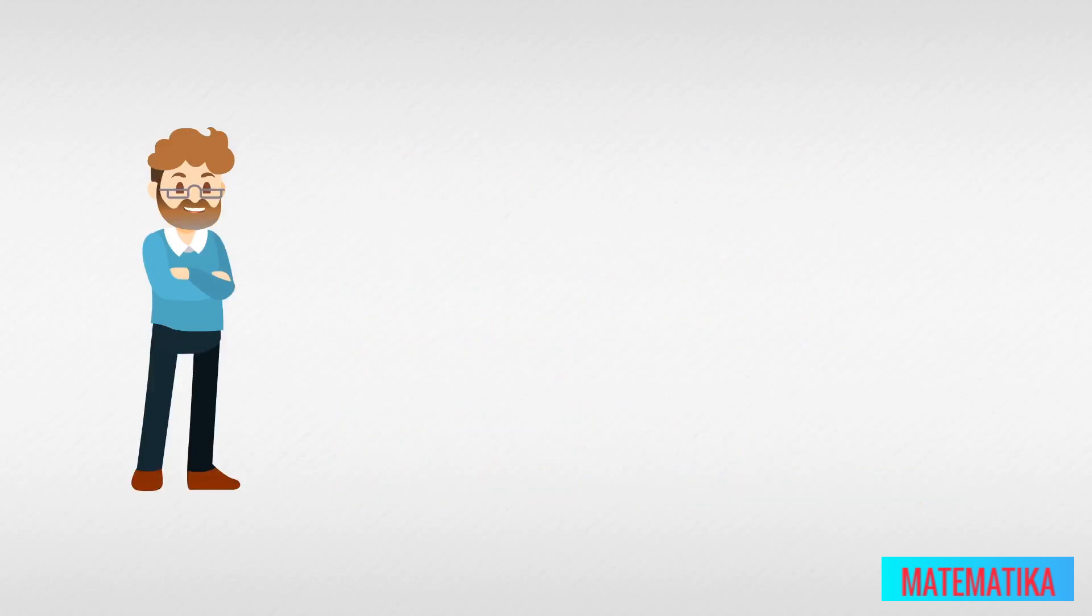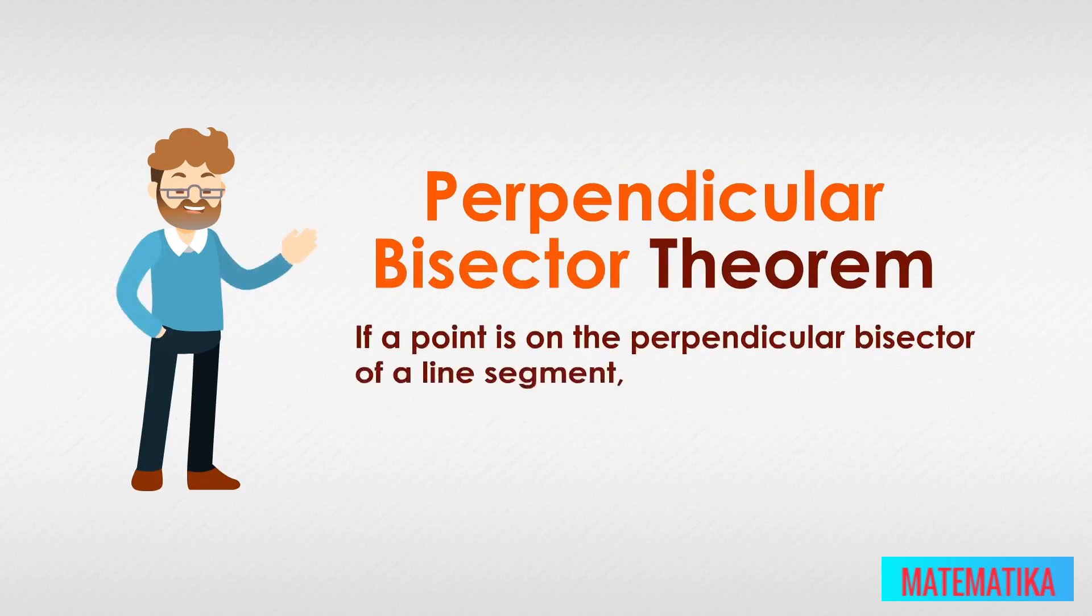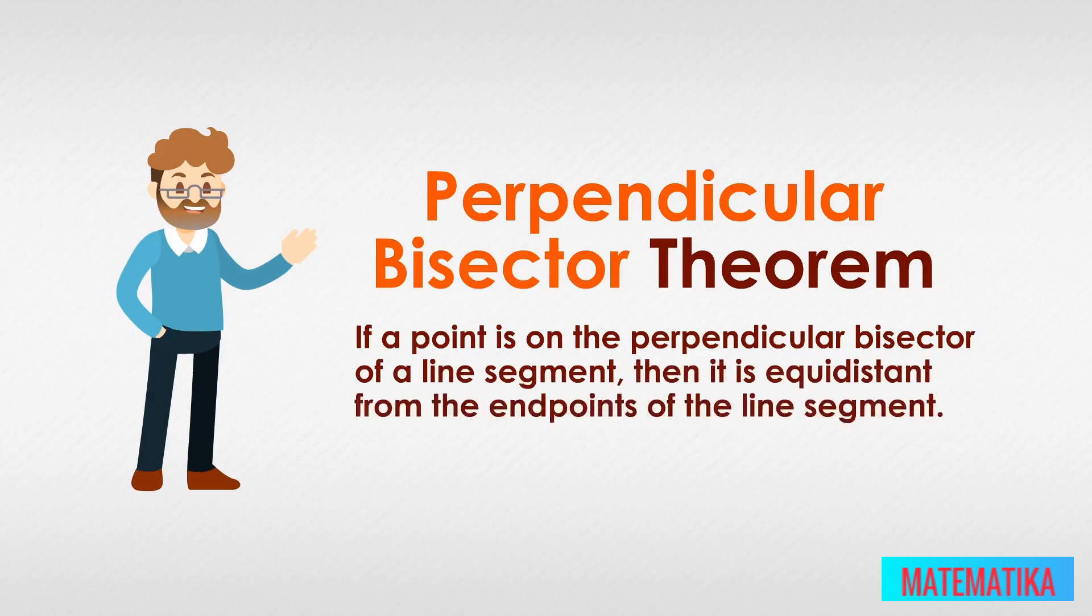So when we put everything together, what does the Perpendicular Bisector Theorem say? It says if a point is on the perpendicular bisector of a line segment, then it is equidistant from the endpoints of the line segment.